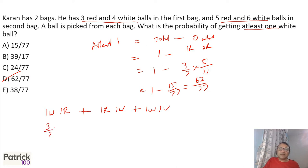So in this case it becomes 3 upon 7 into 5 upon 11 plus, first is white so 4 upon 7 into 5 upon 11. First red, that is 3 upon 7 into 6 upon 11, plus white both. So denominator is 77. You get 20 plus 18 plus 18 plus 24. So if you add it up, you get 62 out of 77.